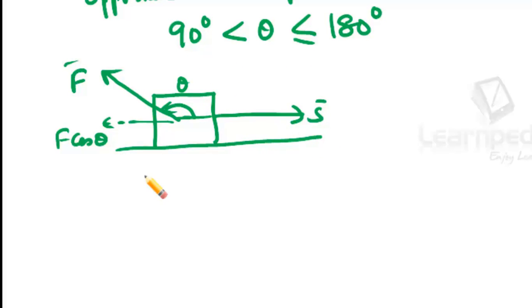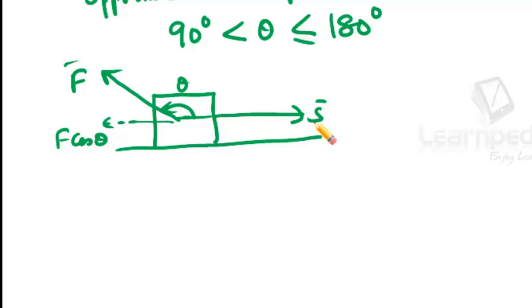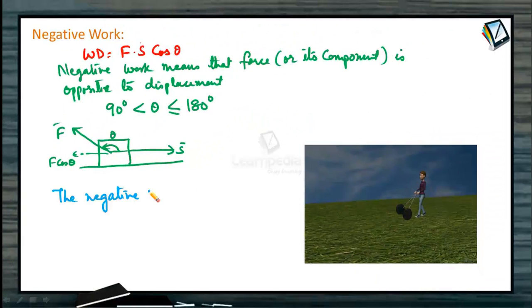What does negative work done signify? Negative work done signifies that the external force opposes the motion of the body.